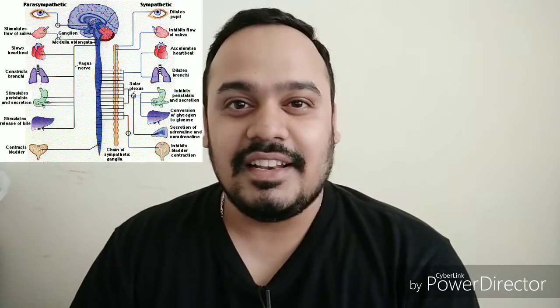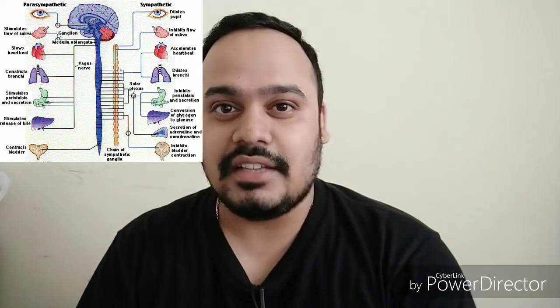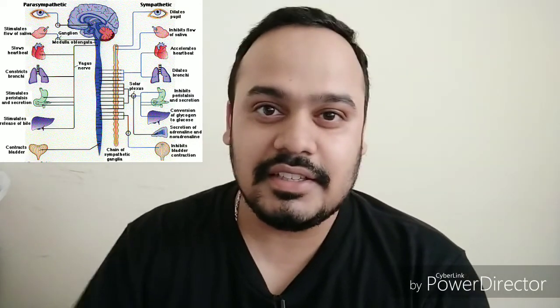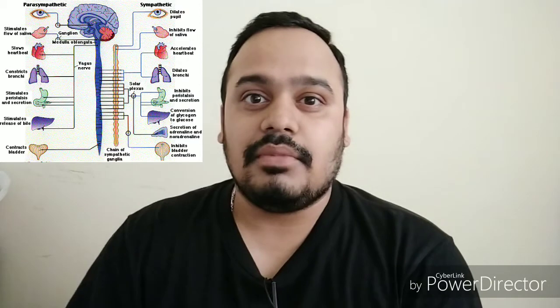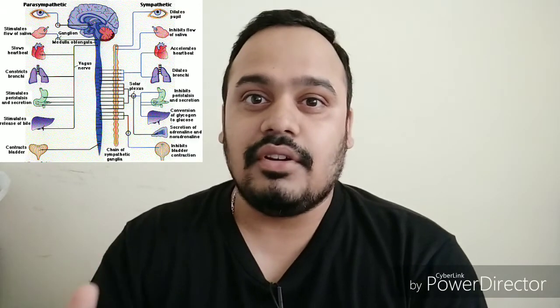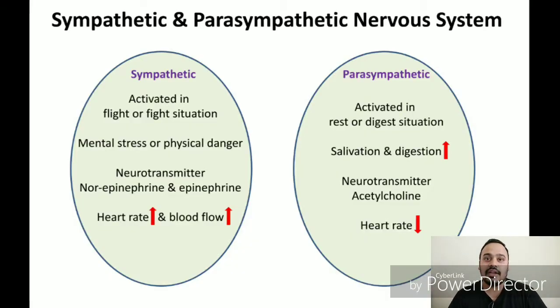The autonomic nervous system is always activated, but is either in the sympathetic or parasympathetic state. Depending on the situation, one state can overshadow the other, resulting in a release of different kinds of neurotransmitters. Now we will talk about the sympathetic nervous system and parasympathetic nervous system.